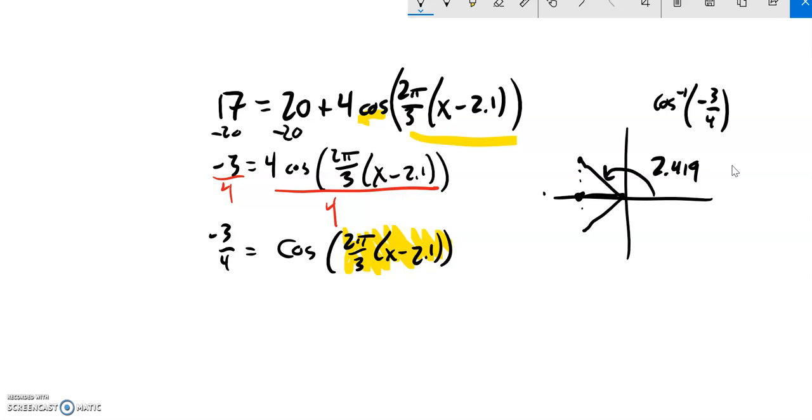I get about 2.419, which makes sense to me. This is pi, that's about 3, so 3.14, it's a little less than it but it's more than π/2. That's good, this is in radians.